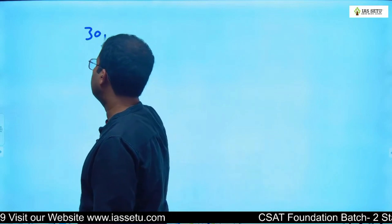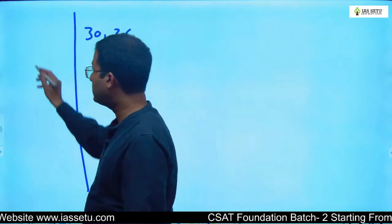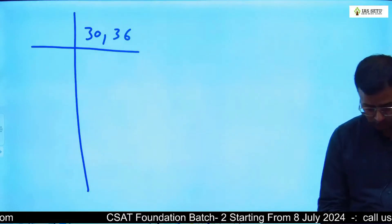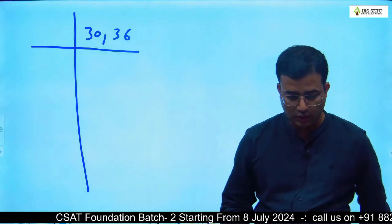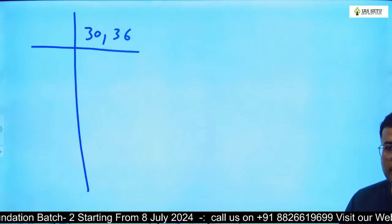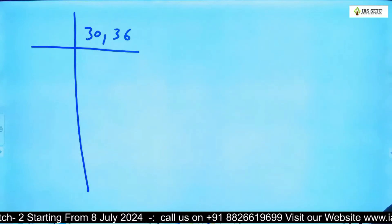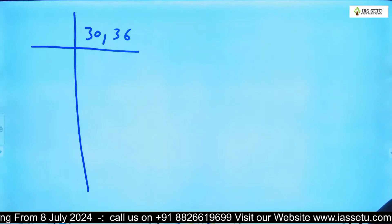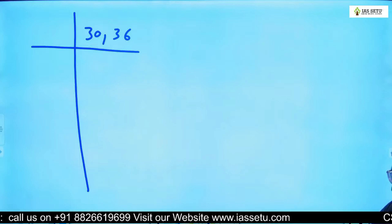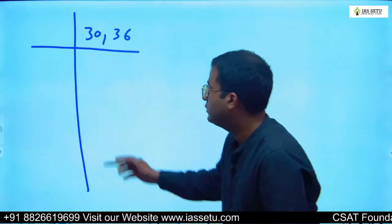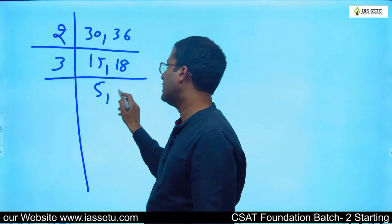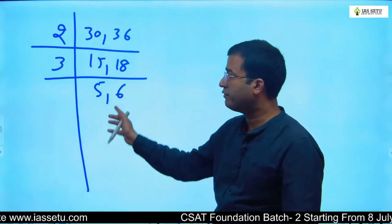I take numbers like 30 and 36. Remember this diagram. First, I tell you LCM, and once you know LCM, HCF is easier at some time. We take common factors out. We take 2 common, then we take 3 common, then 5. After that, we don't have any other common factor.